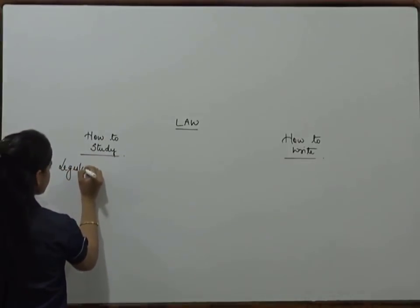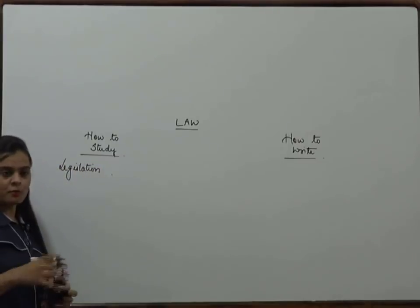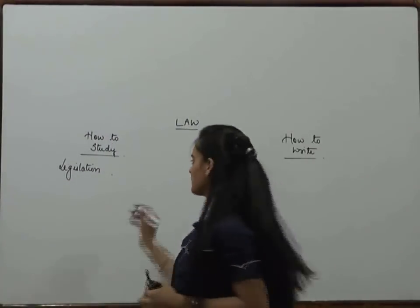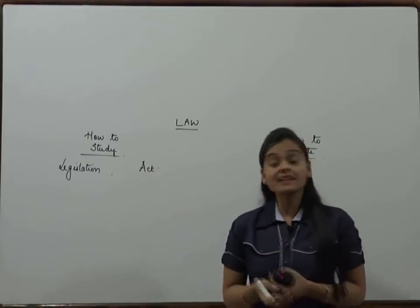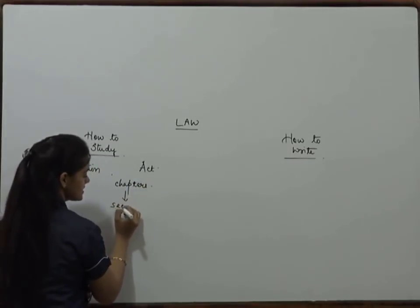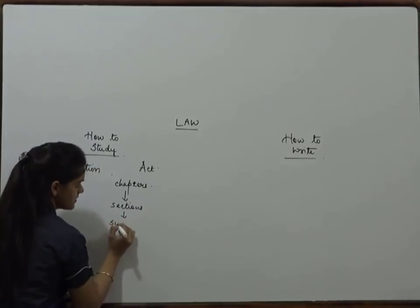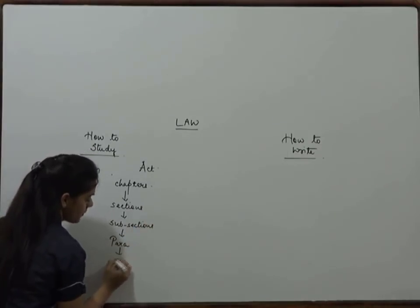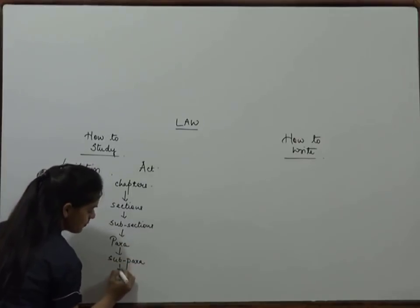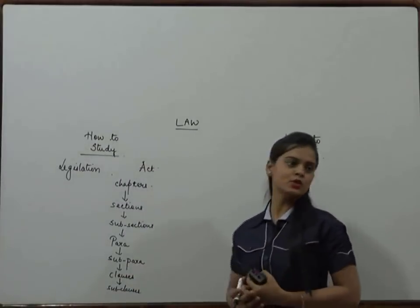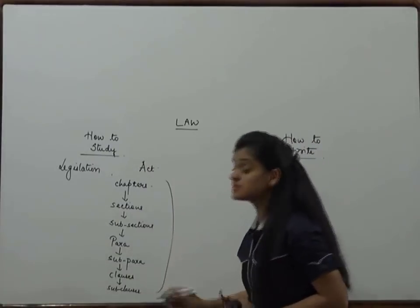Now, what is an Act? Legislation which is passed — if there is a law or a bill which has passed on legislation, then what does it become? An Act. Now, an Act has chapters. What are chapters? Sections. What are sections? Subsections. What are subsections? Paragraphs. What are paragraphs? Sub-paragraphs. And then clauses — all clauses. And if you look at all these things, what are they relevant for you?